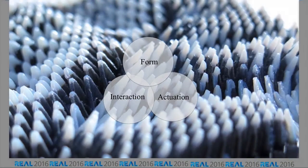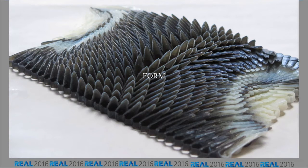The design process of this project can be broken down into three main categories: how I generate the form, how I actuate it and make it dynamic, and how I design the interaction. For me, form or geometry is a means of controlling material properties — how you can generate forms that have various material properties across the scale.